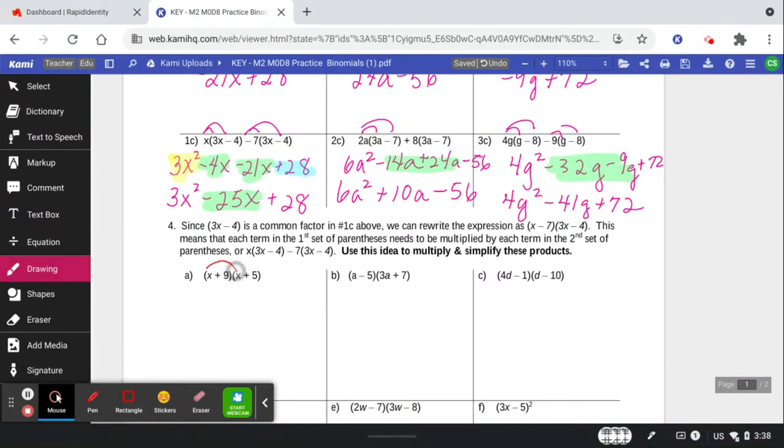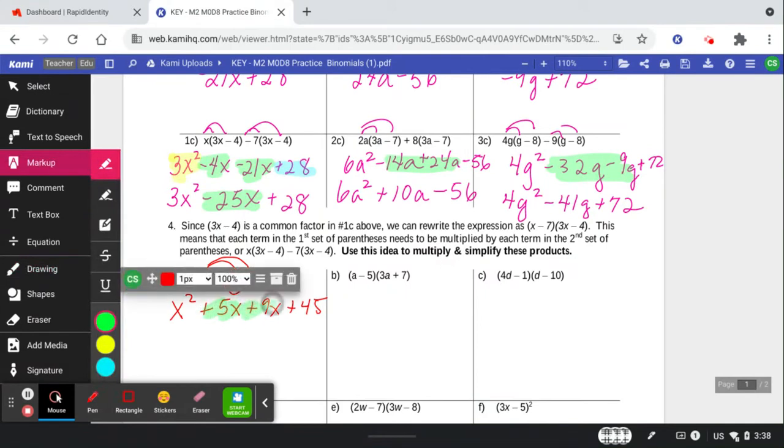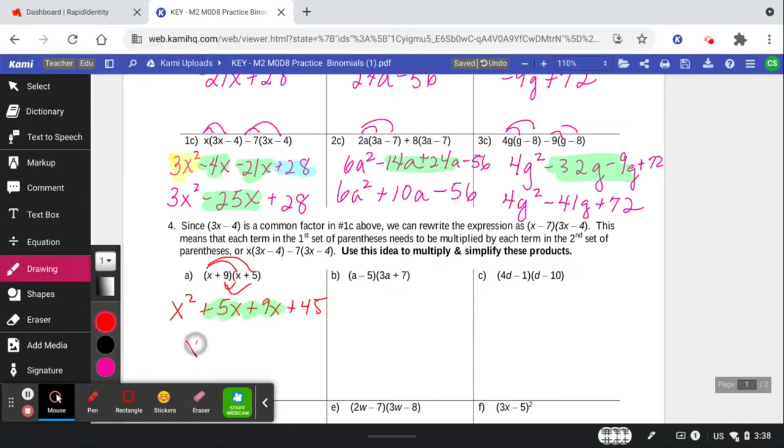Foil method first. X times x is x squared. X times 5. X times 9. 9 times 5. Then we combine those middle terms for a final trinomial answer of 14x plus 45. How'd you do? Pause the video. Try a couple. See how you do.